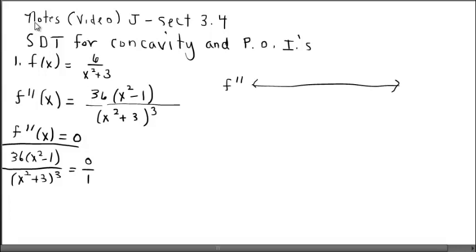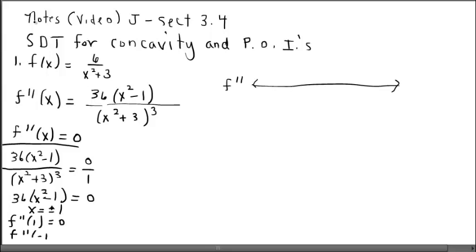Using cross products, I'm going to divide out the 36, and we can see that we're going to have two solutions: positive and negative one. So the second derivative at x=1 is zero, and the second derivative at x=−1 is also zero. I'm going to put those values on my number line — we have zero second derivatives at those values.